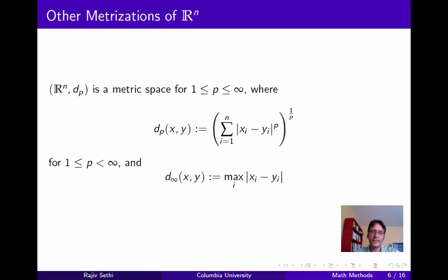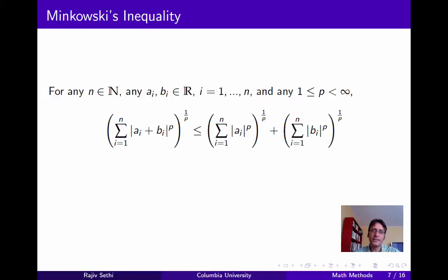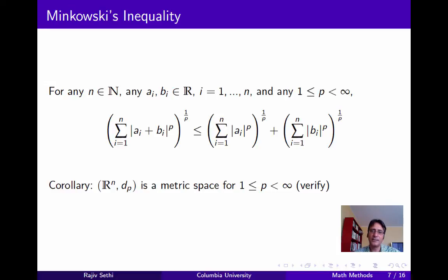Aside from Euclidean distance, we can have other metrizations of Rn. For example, if we replace 2 with p in the definition of Euclidean distance, and p is any number greater than or equal to 1, we get an alternative metrization of Rn which we can call dp. And if we take the extreme case where p is infinity, we get the sup metric, under which the distance between two points x and y in Rn is just the maximum component-wise distance. You can verify that dp is in fact a metric for Rn by direct application of Minkowski's inequality, shown on the slide, replacing ai with xi minus zi and bi with zi minus yi, which shows the triangle inequality is satisfied. We'll deal with the case of d-infinity or the sup metric later.